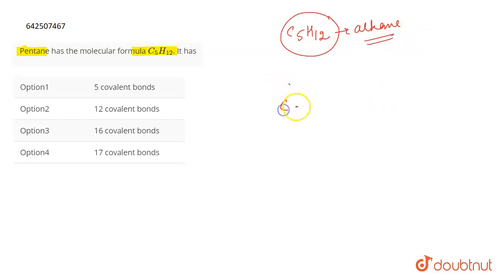So if we draw the structure of pentane, it will be C-C-C-C-C. So 5 carbons in a single chain, then you will add hydrogens to complete the valency of carbon. So this is how you will be adding hydrogens to each carbon according to its valency.